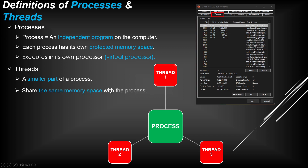Threads share the same memory space with the process and execute concurrently with it. Inside a process we can have many threads — 10 threads, 20 threads — it depends on the program.